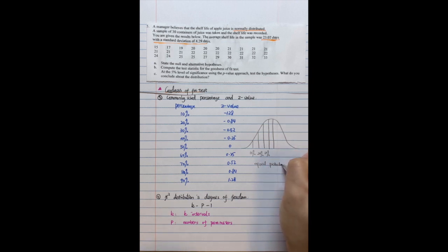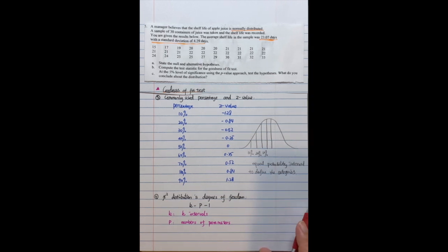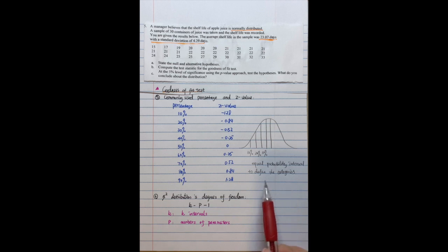So we will use equal probability intervals to define the category. And then after that, we can switch the continuous distribution into categorical variables.